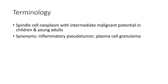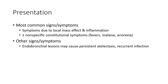In children and young patients, a synonym is inflammatory pseudotumor or plasma cell granuloma. Most common signs and symptoms are due to local mass effects and inflammation, including non-specific constitutional symptoms such as fever, malaise, and anorexia. Endobronchial lesions may cause persistent atelectasis and recurrent infection.